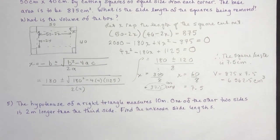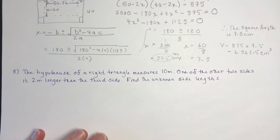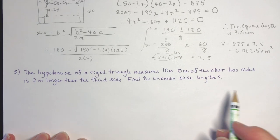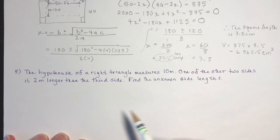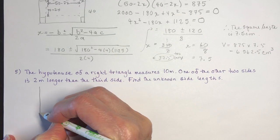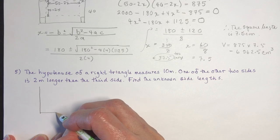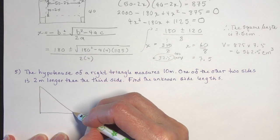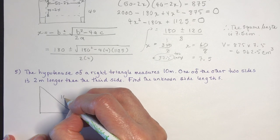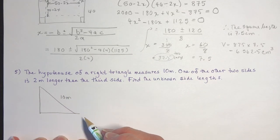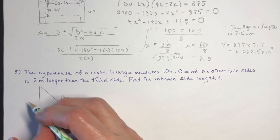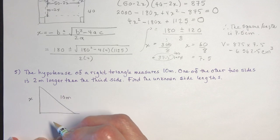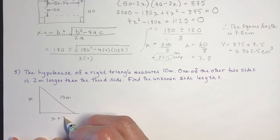One more question: the hypotenuse of a right triangle measures 10 centimeters. One of the other two sides is 2 meters longer than the third side. Find the unknown side lengths. Let's draw a right angle triangle with hypotenuse 10. Let one side be x, then the other side is x plus 2.